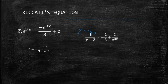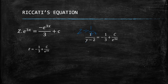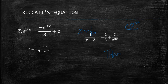Now recall that z = 1/(y - y₁) = 1/(y - 2). We substitute this back in to get 1/(y - 2) = -1/3 + Ce^(3x). Try making y the subject — please comment your answer below so we can have some interaction. Thank you for watching; please like, comment, and subscribe for more videos.